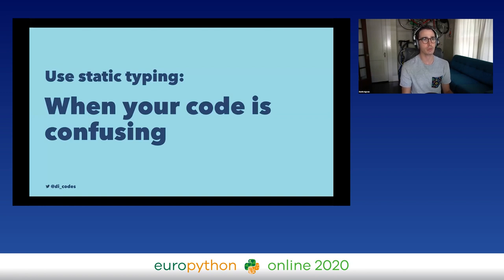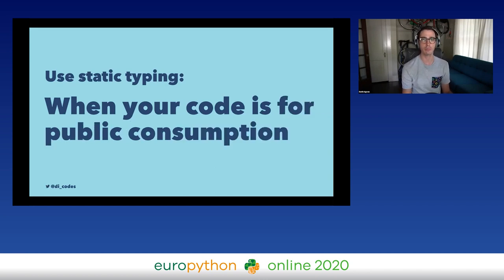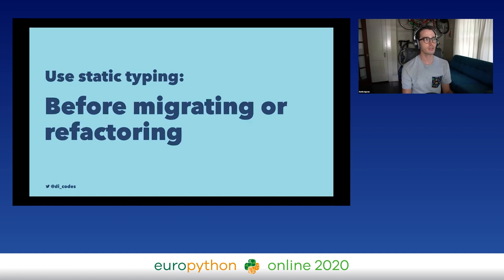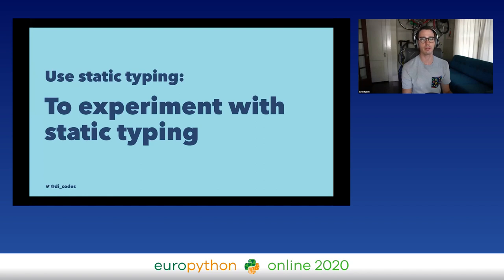You should also use static typing when your code is confusing. Some people like to say that annotations are machine-verified documentation — and that's true. If you feel like you need to document a confusing function's input/output types, you should probably just statically type it, because it will be just as clear and you can also do static analysis on it. You should use static typing when your code is for public consumption as well — if your users are already using static typing in their codebase and want to pull in something from your library, they'll love that you support static typing too. Another place is before migrating or refactoring: add static types, move things around, and see if any of the typing breaks — that's probably a bug. Finally, you can use static typing just to experiment with it. It doesn't hurt, it's totally painless, and it's a fun way to learn about a new part of Python.